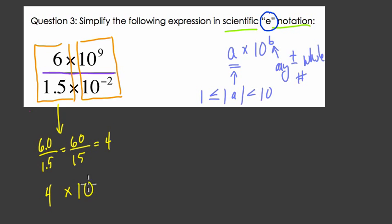Now we divide these two powers of 10, we subtract our exponents, and we have 9 minus negative 2. 9 minus negative 2 is 11. So that's our exponent there.